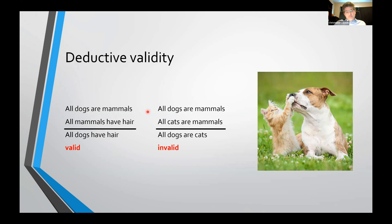These are arguments in standard form — the premises are listed at the top, then there's a solid line, and the conclusion underneath. This is a valid argument: if it's true that all dogs are mammals and all mammals have hair, then it must be true that all dogs have hair. It's not possible for the conclusion to be false if these premises are true.